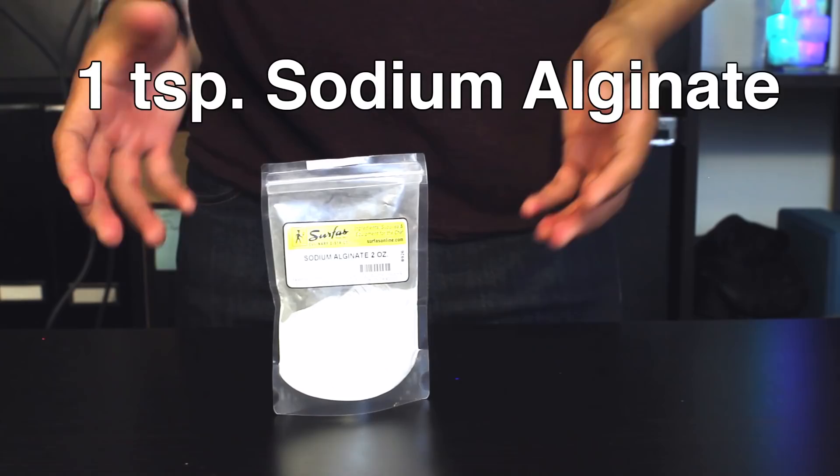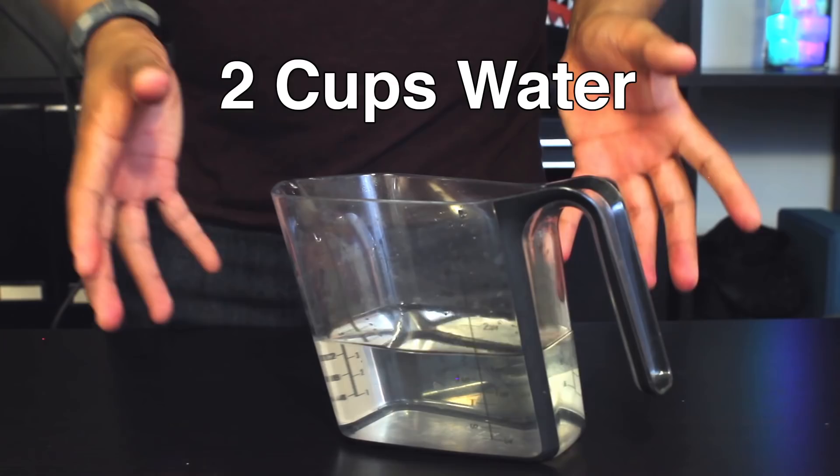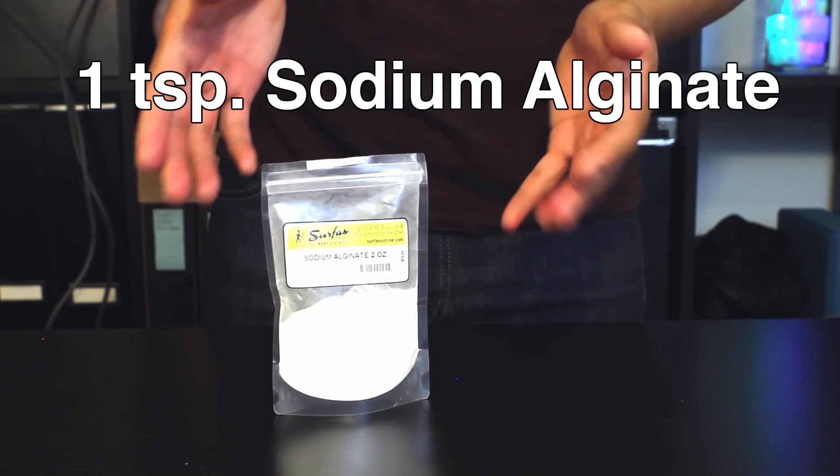Four cups of water for your sodium alginate bath, an additional two cups of water for your calcium chloride solution, one teaspoon of food grade sodium alginate. If you're in LA, you can find this at Surfas. If not, you can find this online.